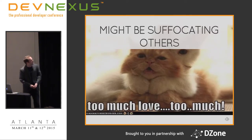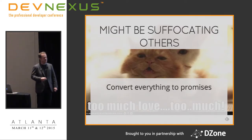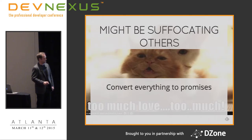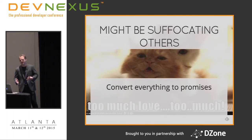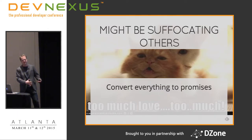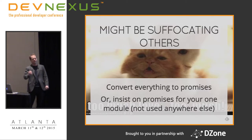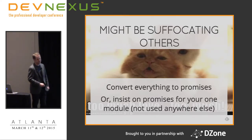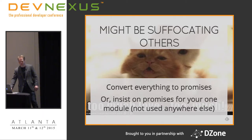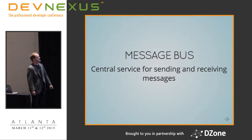Some signs you might be annoying your team: if you're the developer who keeps rewriting everyone's code and converting everything to promises without a team discussion, people are probably a little annoyed. Decide as a team that you're going to adopt this pattern, because code bases that are half promises and half not are hard to maintain. Likewise, just insisting on using promises in your own code without agreeing on a standard leads to the same problem.